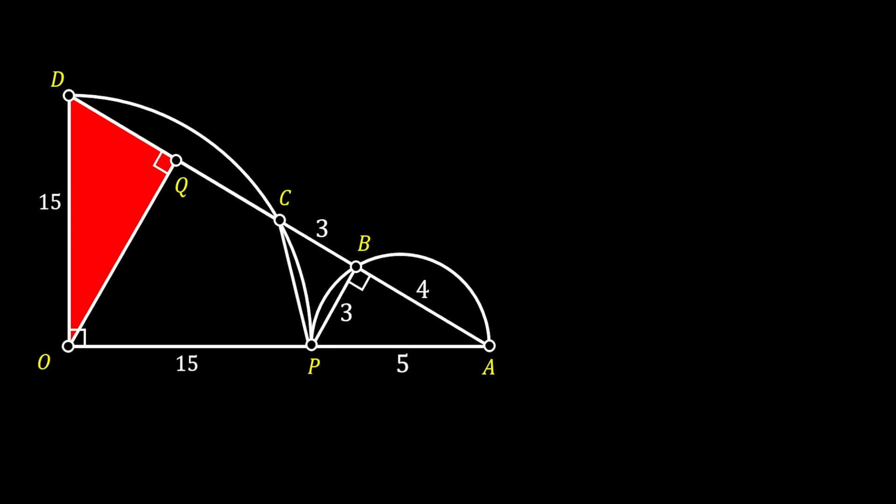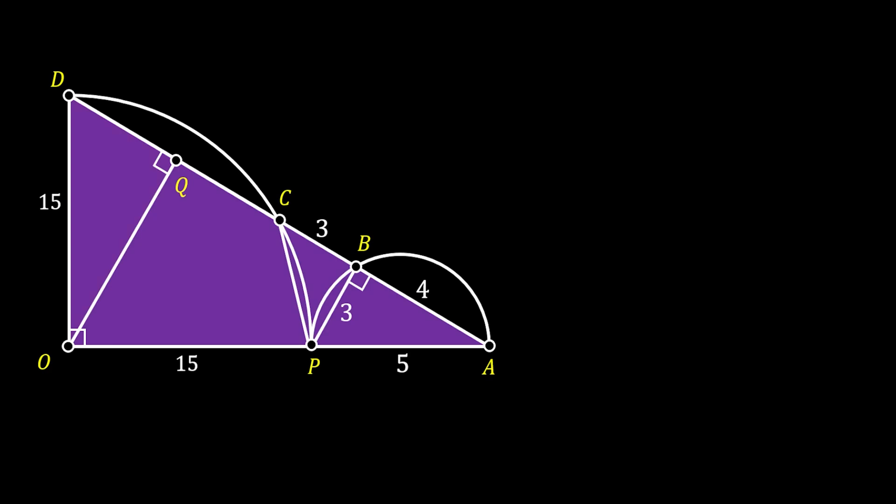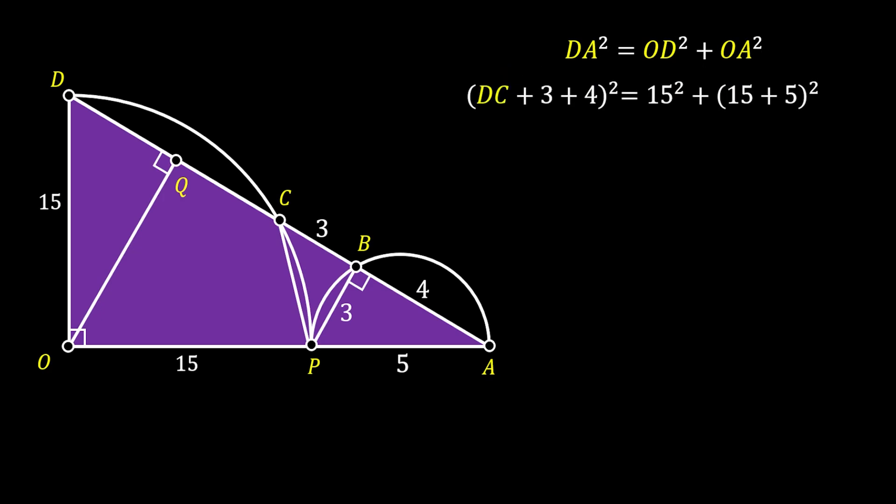Now let's go back to our purple right triangle. We can use the Pythagorean theorem: hypotenuse DA squared equals leg OD squared plus leg OA squared. Substituting values from the sketch, the length of DA equals the sum of segments DC, 3, and 4. Leg OD equals 15, and leg OA equals the sum of segments with values 15 and 5.